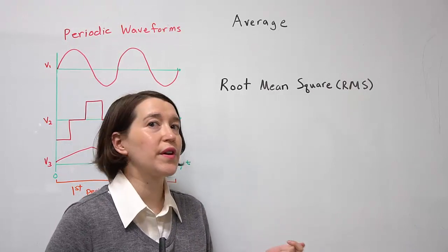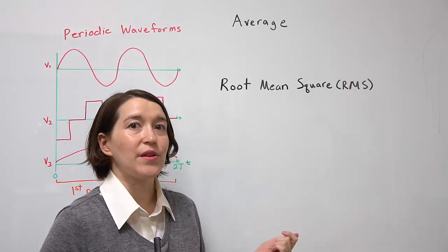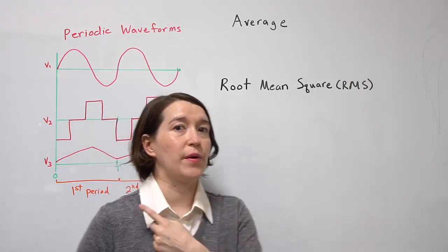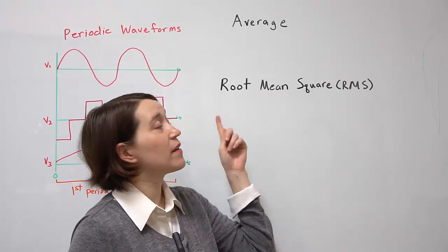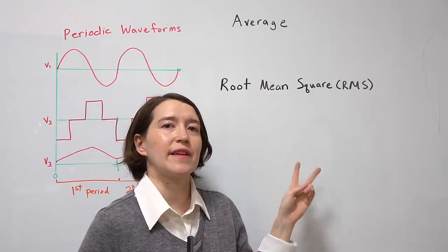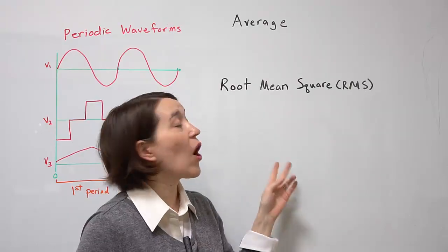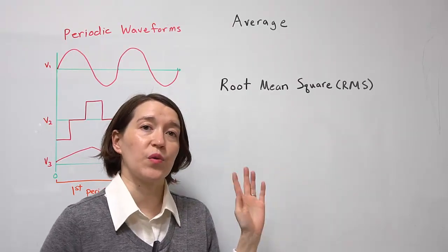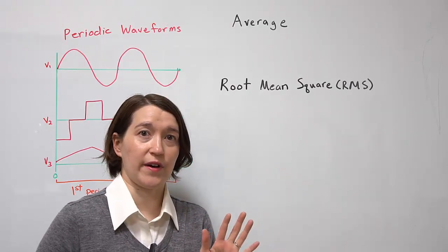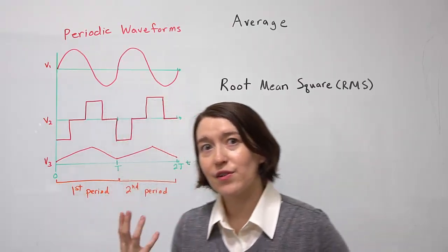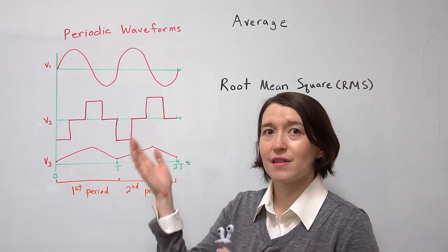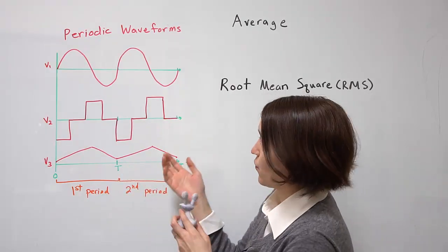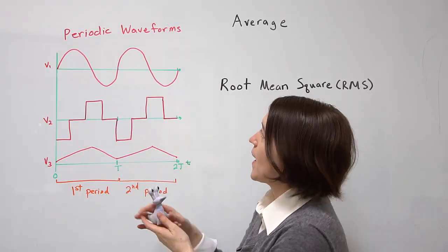We're going to talk about two very important values for these periodic waveforms. One is the average, and the second one is the RMS value, or the root mean square value. The average one is more intuitive, so let's look at these examples real quick.